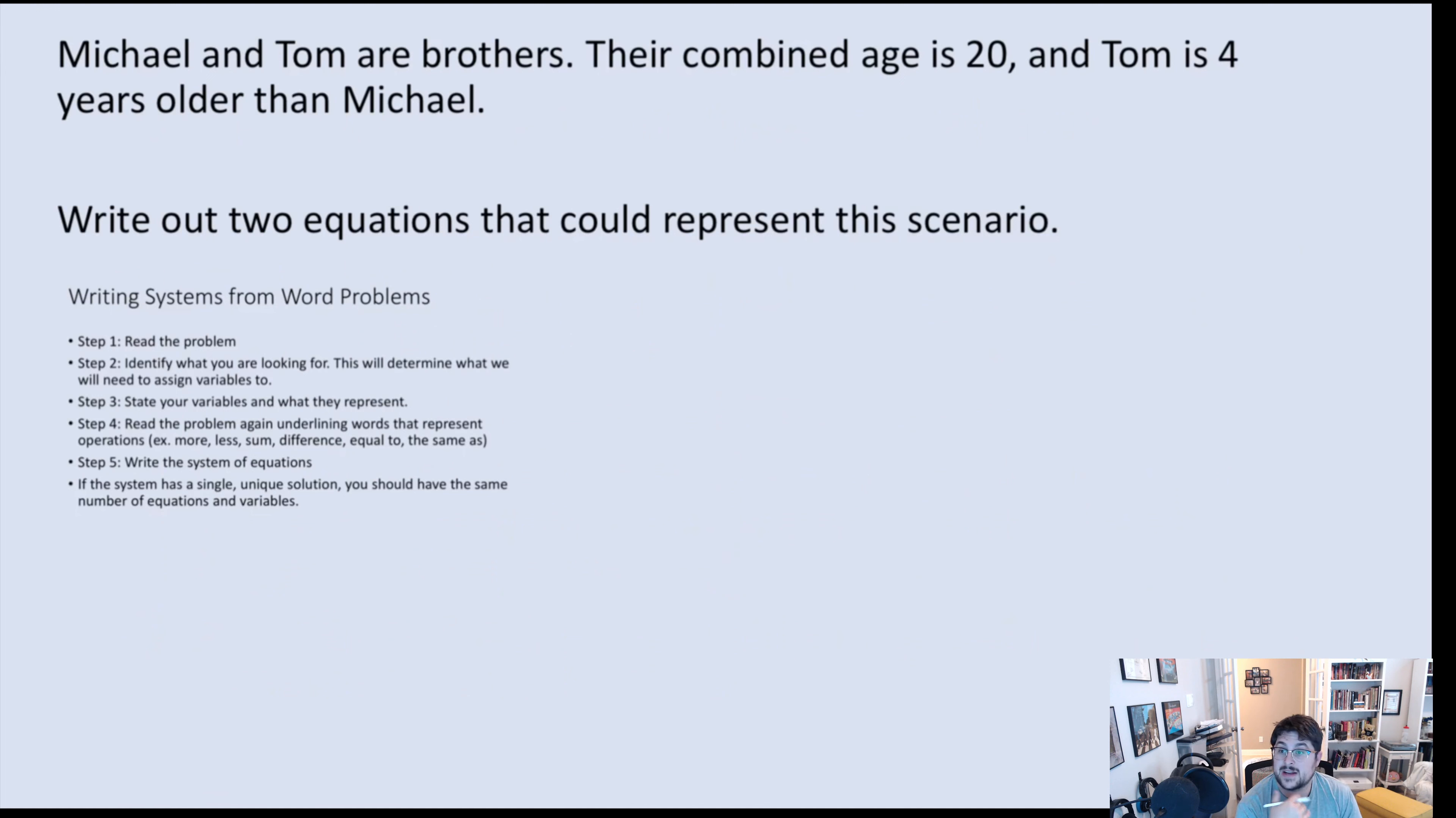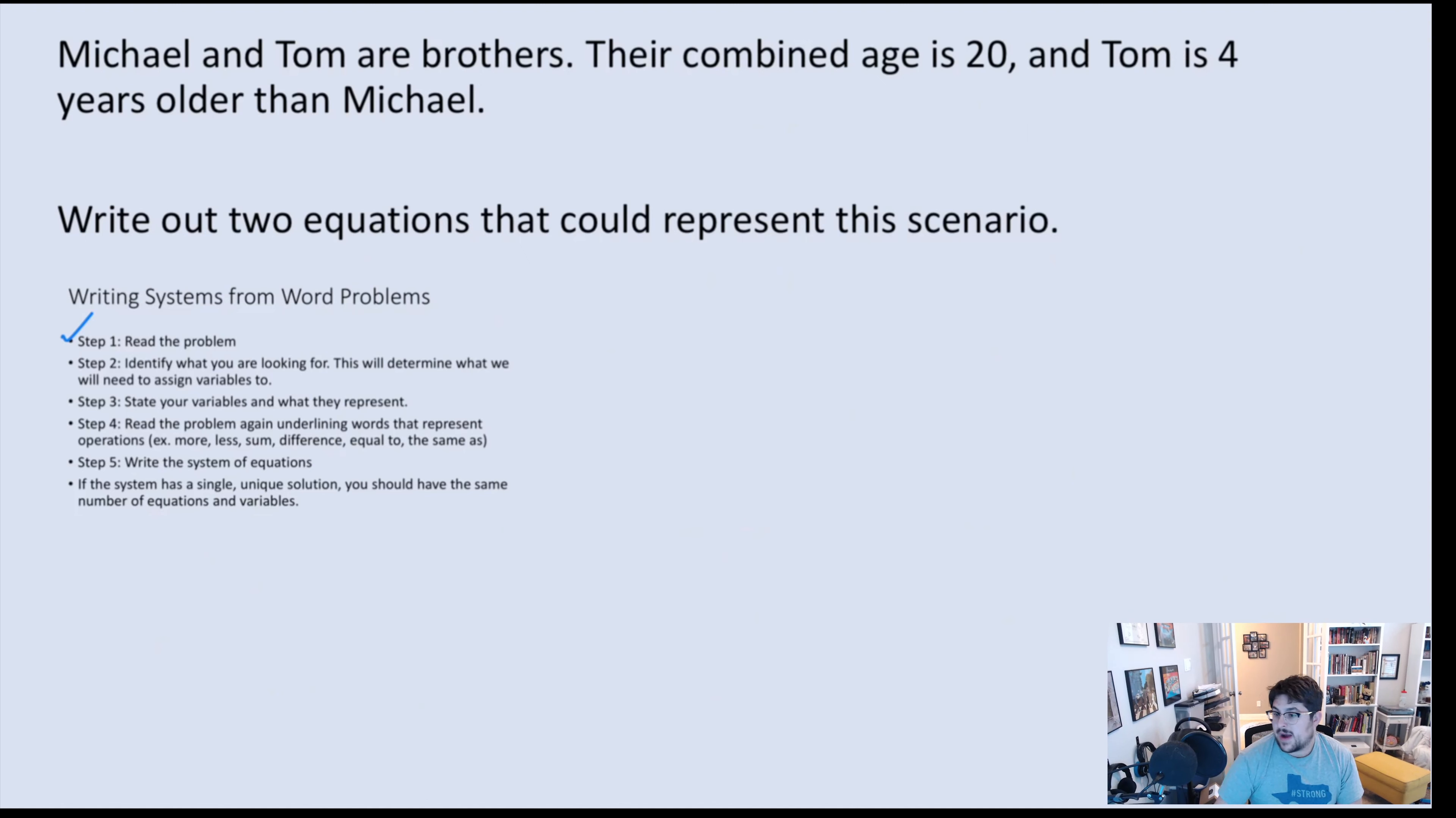Michael and Tom are brothers. Their combined age is 20, and Tom is four years older than Michael. We read the problem. Now we want to see what we're looking for. What do we not know here? Well, what we don't know is we don't know either of their ages. They talk about ages, but we actually don't know what their ages are. So let's say that M is Michael's age. Let's say that T is Tom's age. We now have identified what we're looking for. We state our variables and what they represent. Now we're looking for keywords.